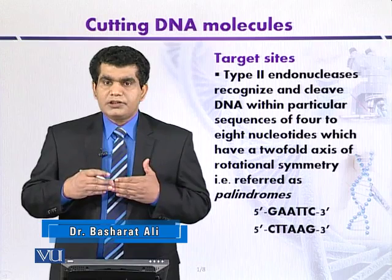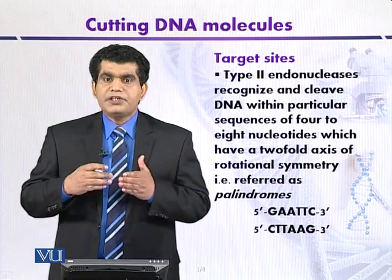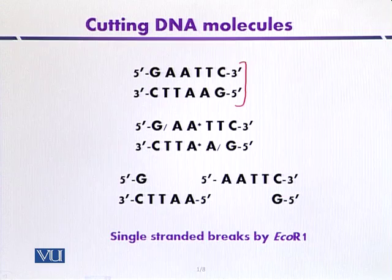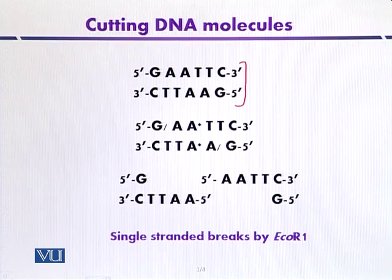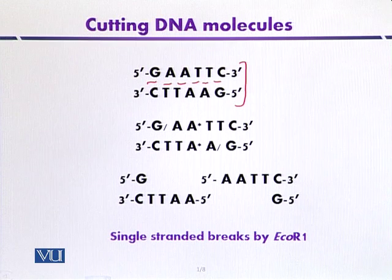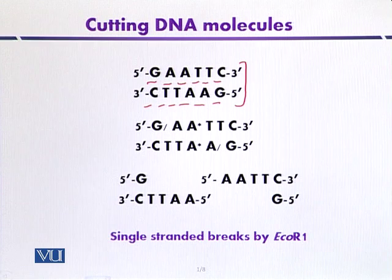What is a palindrome? Palindrome means words that read the same either from the right or the left side. For example, here is the recognition sequence for EcoR1 restriction enzyme. This sequence is called a palindrome because it reads the same from 5' to 3' in one direction and also reads the same from the other direction — that is, GAATTC. Such sequences are called palindromes.